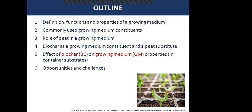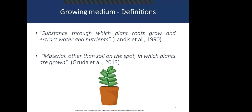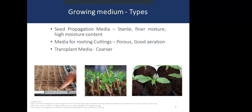You can define a growing medium in two different ways: as a substance through which plant roots grow and extract water and nutrients, or as a material other than soil in which plants are grown. According to use, you can find three types of growing mediums: seed propagation media, media for root cuttings, and transplant media.